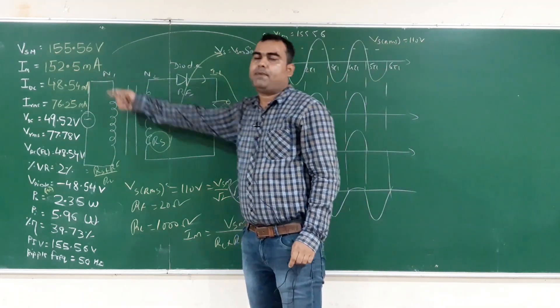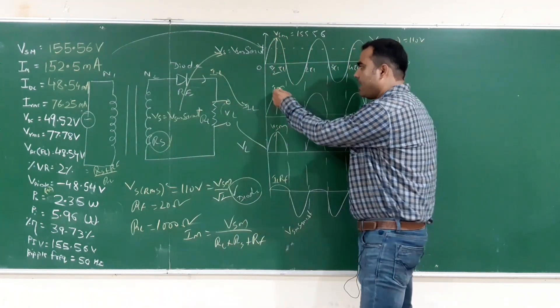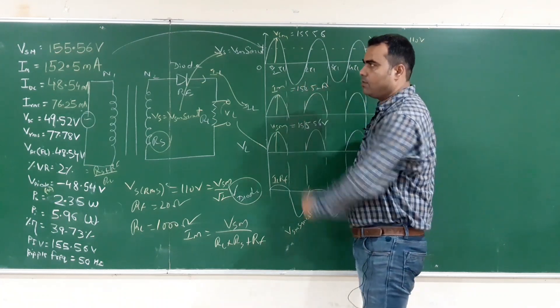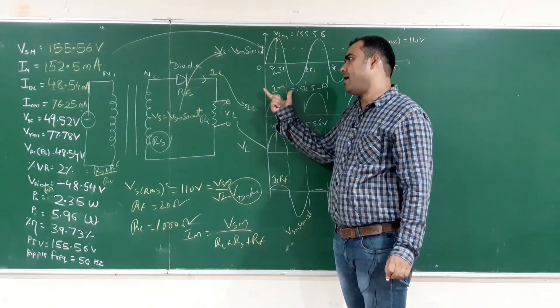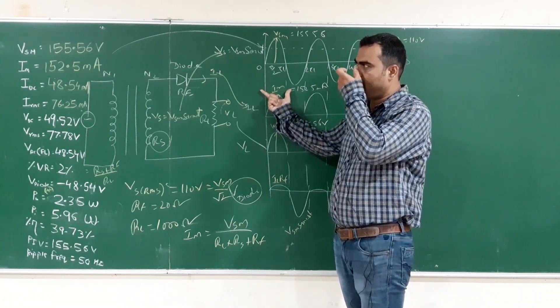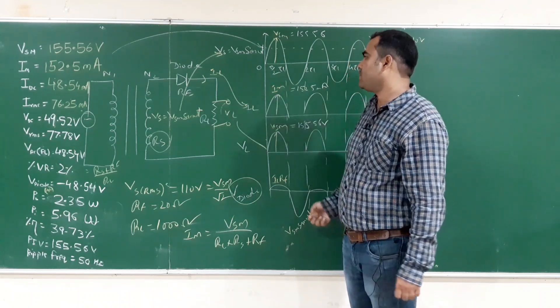Next, Im. Im is the peak value of current. The peak value of this current is 152.5 or 38.5 mA. We are solving in milliampere. If we write answer in ampere, there will be many zeros and it will be difficult to identify. That's why we solve in milliampere.